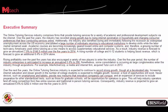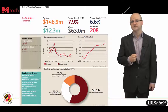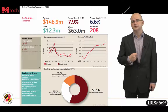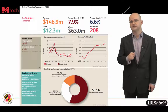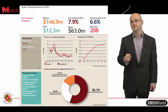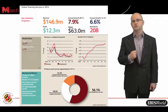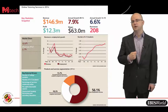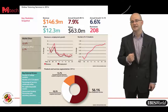IBISWorld reports provide lots of valuable data. For online tutoring services in 2014: revenues of $146.9 million, annual growth over the prior five years of 7.9 percent, projected annual growth over the coming five years of 6.6 percent, industry profit of $12.3 million, wages of $63 million, and 208 businesses. Doing some of my own math — dividing total profit by the number of businesses — I calculate the average profit per business is approximately $60,000.